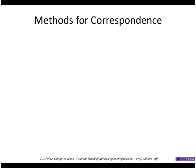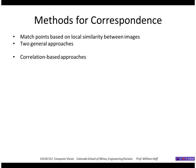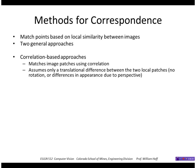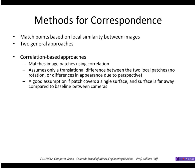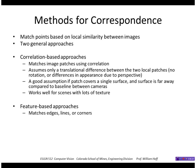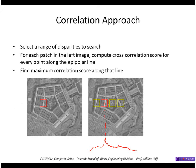Two general methods are used for finding correspondences. Correlation approaches match image patches using correlation-type methods, assuming only a translational difference between the two patches — a good assumption if the patch covers a single surface. This works well for scenes with lots of texture. The other approach matches discrete features such as edges, lines, or corners, giving only a sparse reconstruction. We can interpolate a smooth surface between estimated points. This approach may be better for scenes with little texture, which is common for many manmade objects.